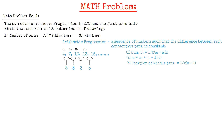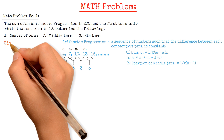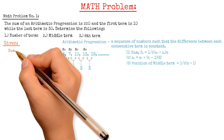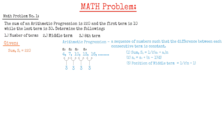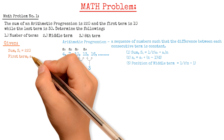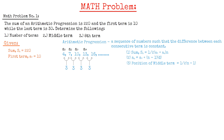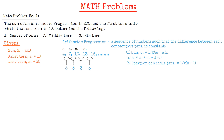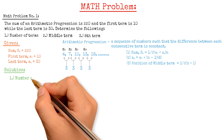Going back to the problem, the given data are the following: the sum Sn equals 220, the first term A1 is 10, and the last term An equals 30. The first question is to find the number of terms, n.